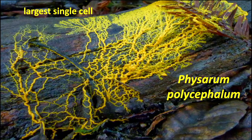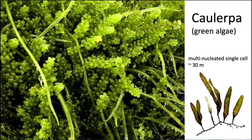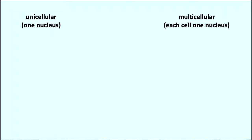We also have the largest single-celled organism: Physarum polycephalum, which means 'many-headed slime.' It's a multi-nucleated single cell — one cell, but with many nuclei inside. Similarly, there's the green alga Caulerpa — also a single cell with multiple nuclei — and it can be as large as 30 meters in size.